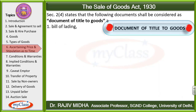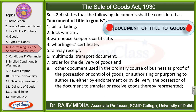The full list of documents of title to goods includes: Bill of Lading, Dock Warrant, Warehouse Keeper's Certificate, Wharfinger's Certificate, Railway Receipt, Multimodal Transport Document, Order for Delivery of Goods, and other documents used in the ordinary course of business as proof of possession or control of goods. The possessor of such a document can transfer or receive goods thereby represented.